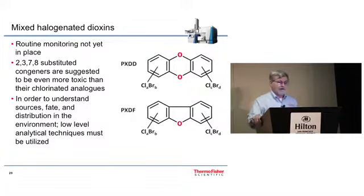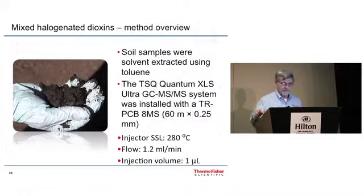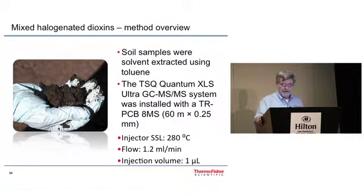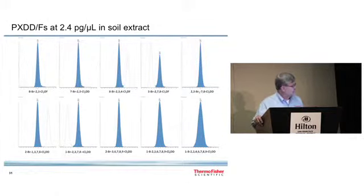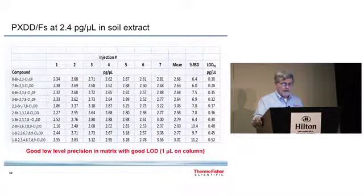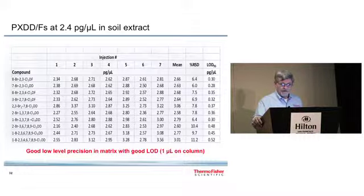Something new and emerging are mixed halogenated dioxins with bromine and chlorine attached. These samples were taken from soil extracts analyzed on a PCB 8MS 60 meter column. And here's some typical results of the peaks at 2.4 picograms per microliter in the extract. And here's a reproducibility study at 2.4 picograms per microliter. And you can see the percent RSD for most of them is less than 10%.